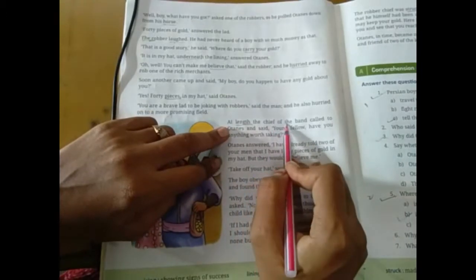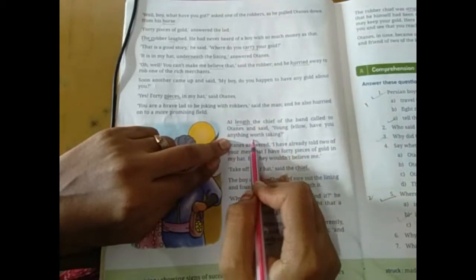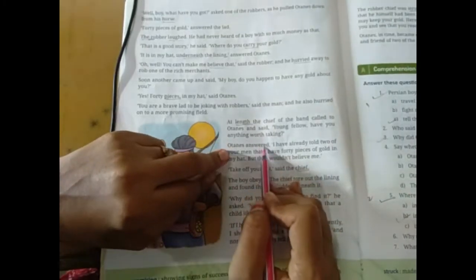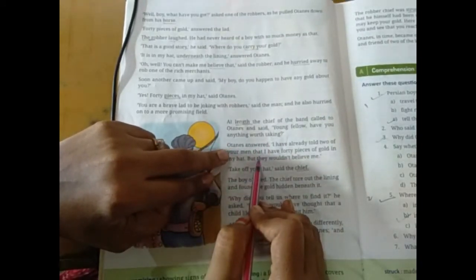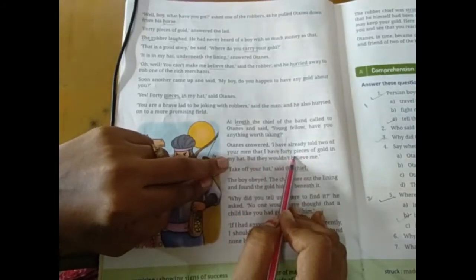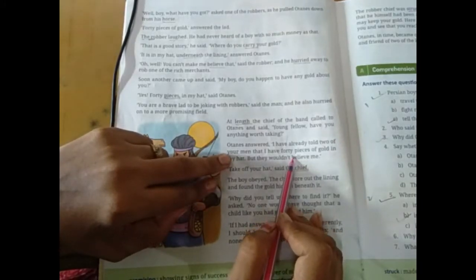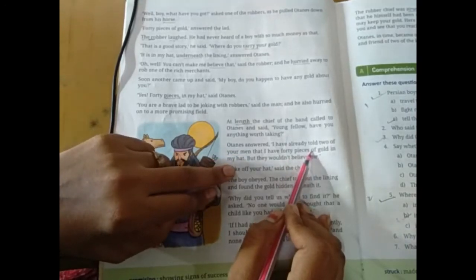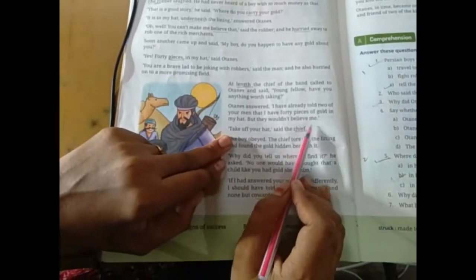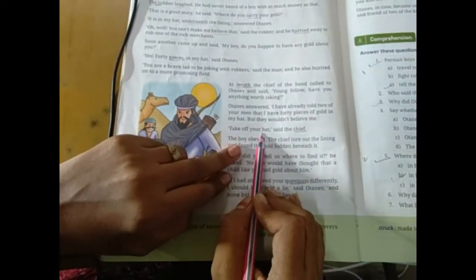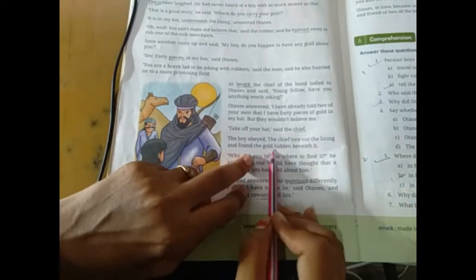At length, the chief of the band called to Hortense and said, young fellow, have you anything worth taking? Ake paas hai kuch? Hortense answered, I have already tried to tell your men. Hortense ke kehta hai, maine already bataya hai, tere paas kuch hai dene ke liye.